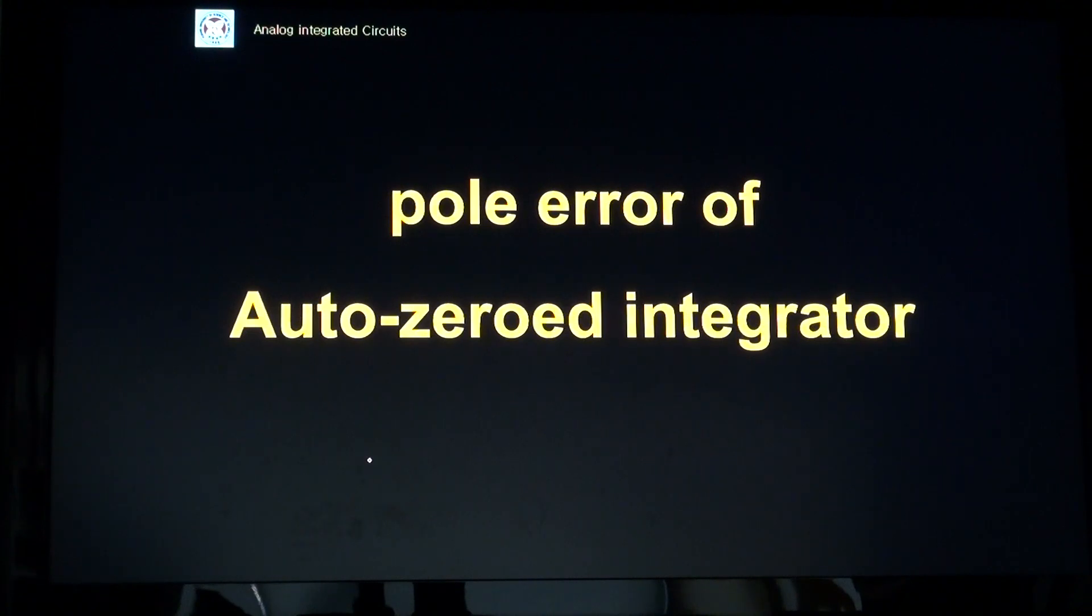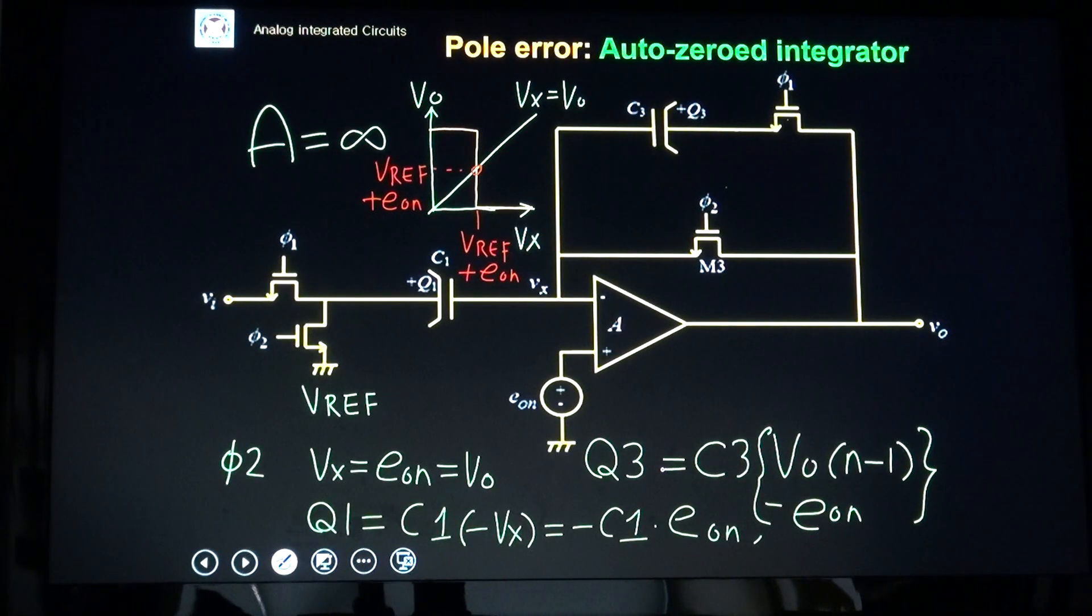Let's consider a pole error of auto-zeroed switch capacitor integrator. This is a circuit of auto-zeroed switch capacitor integrator. Input is VI, output is VO.